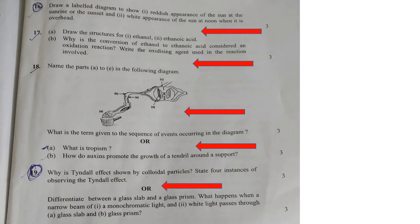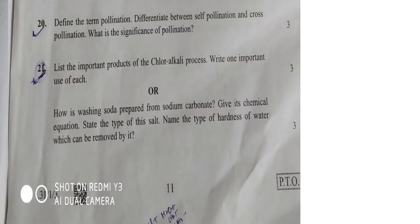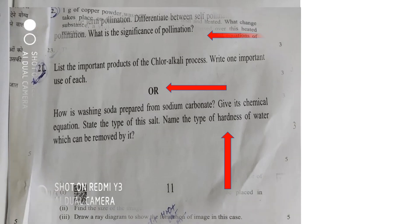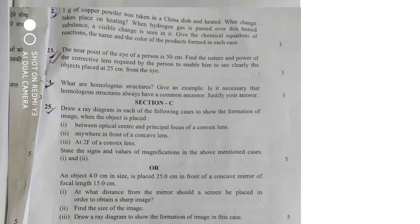Question 17 was easy — you had to tell the structure of ethanol and ethanoic acid, and explain why the conversion of ethanol to ethanoic acid is considered oxidation. In the 18th question, you are given the reflex arc diagram with a choice. There was also a choice on tropism and auxin. Question 19 covers the Tyndall effect of colloidal particles — state four instances by observing the Tyndall effect. Tyndall effect is a very important concept. Question 20 asks you to define pollination and give the difference between self-pollination and cross-pollination.